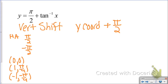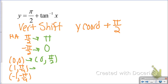I'm going to take my Y coordinates and add π/2 to each. The horizontal asymptotes also get shifted up: π/2 shifts to π, and −π/2 shifts to 0. The point (0, 0) becomes (0, π/2). For (1, π/4), I need a common denominator: π/4 plus 2π/4 gives 1, 3π/4. And (−1, −π/4) ends up at (−1, π/4).